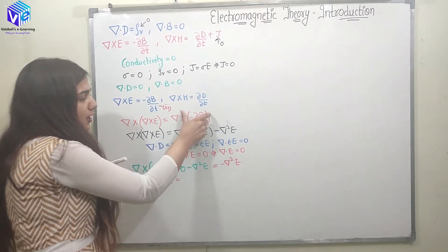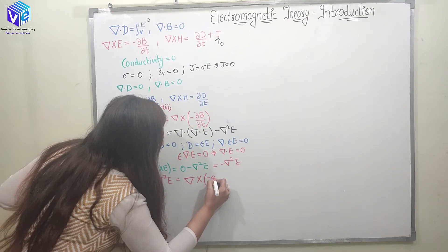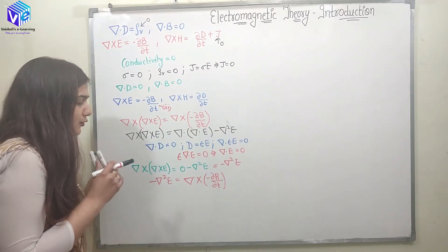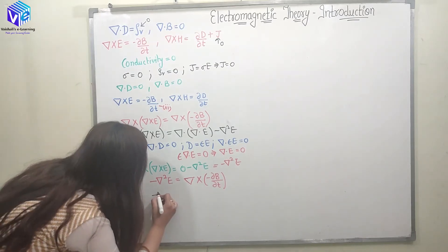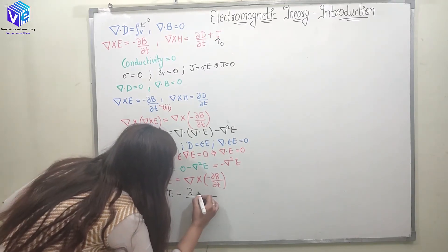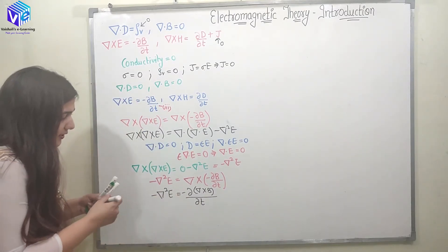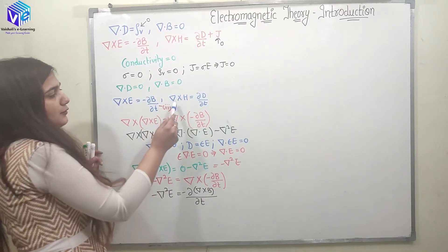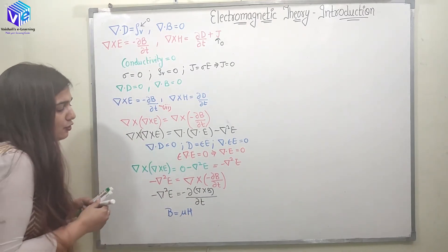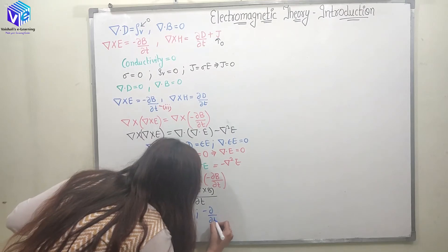So the left-hand side is −∇²E. On the right-hand side I have ∇×(−∂B/∂t). I take ∂/∂t outside, and I can also pull the minus sign out, giving −∂/∂t(∇×B). Now I need to find ∇×B. I know ∇×H and the relationship B = μH. So let me substitute: ∇×B = ∇×(μH), and since μ is a constant, I can pull it outside.